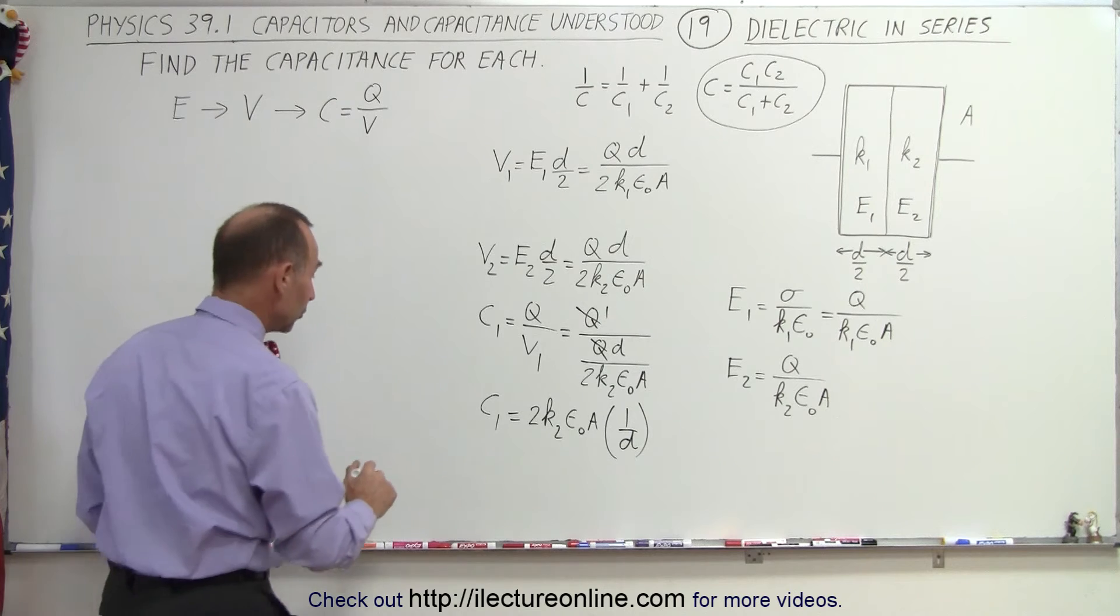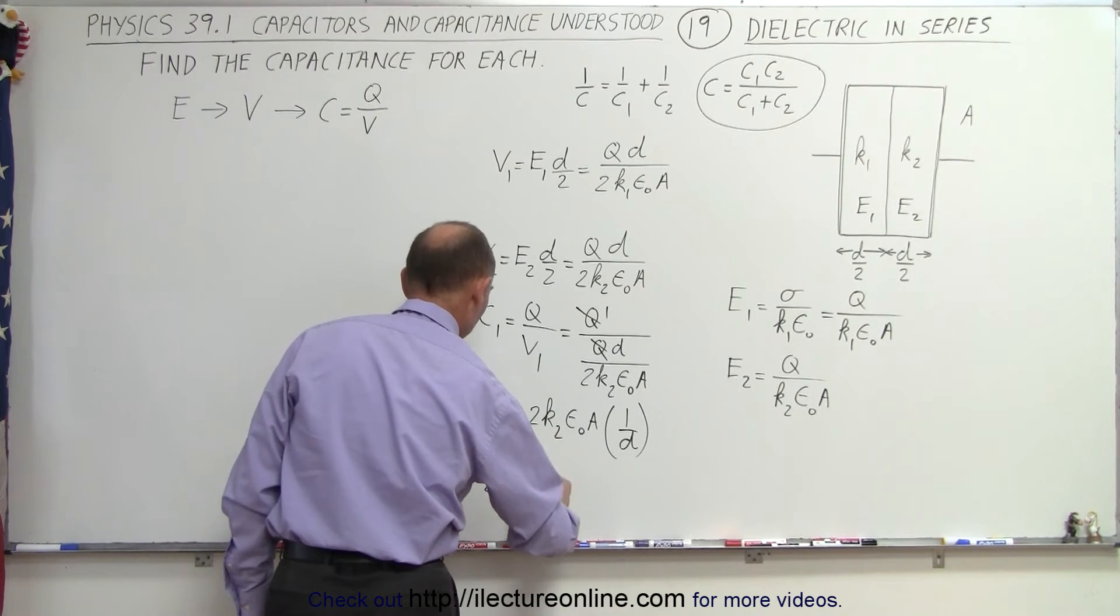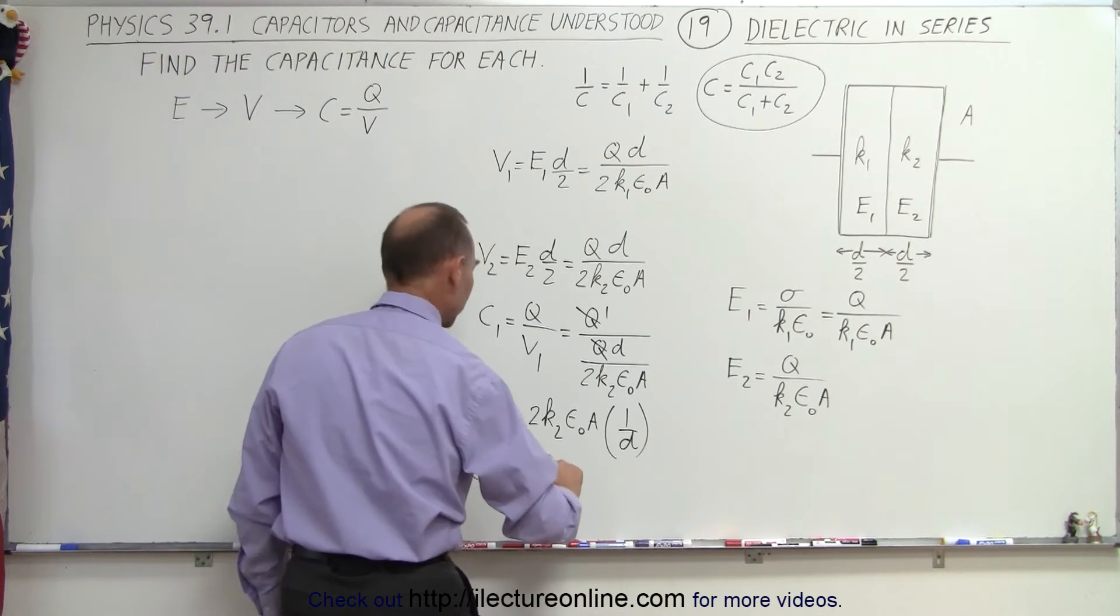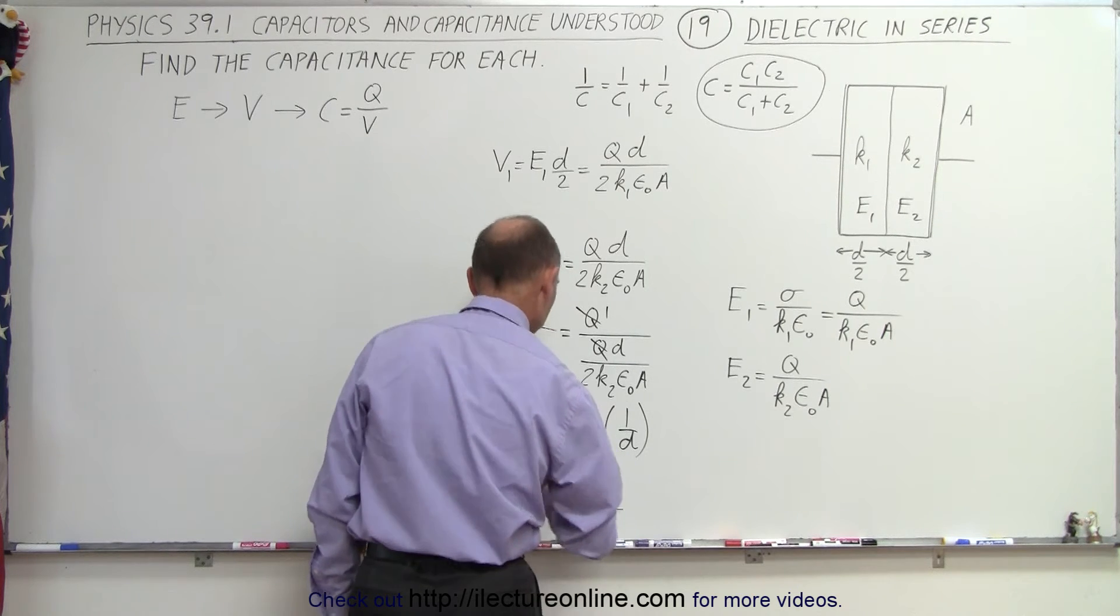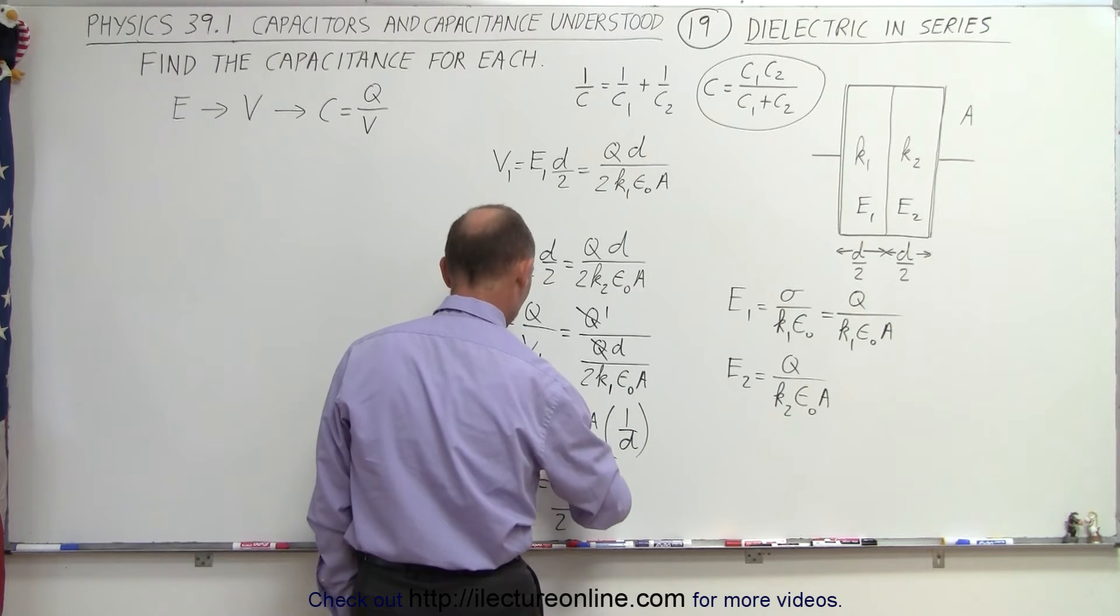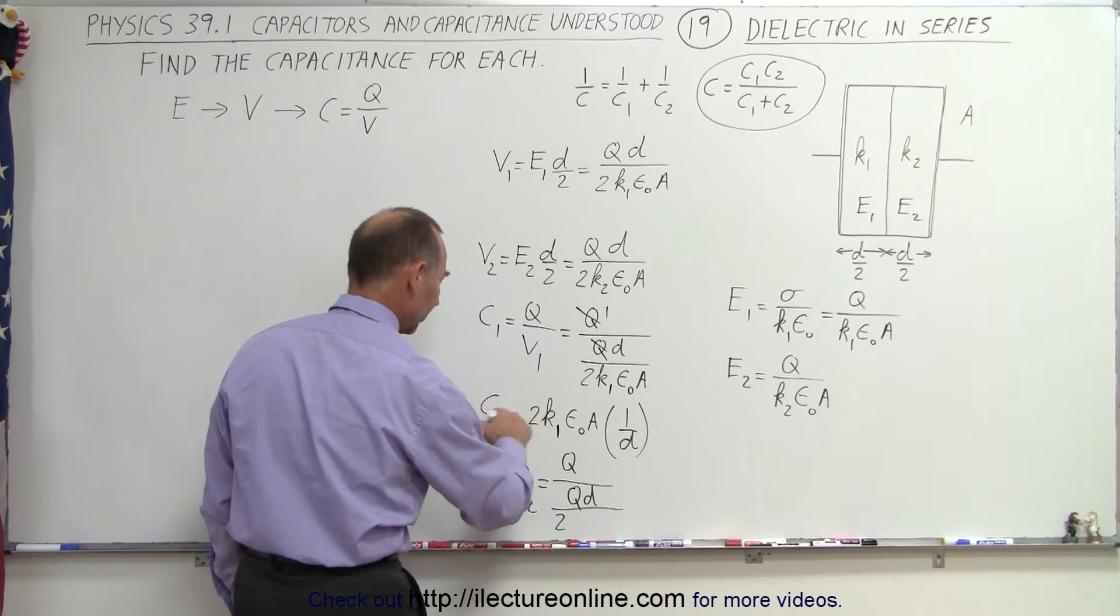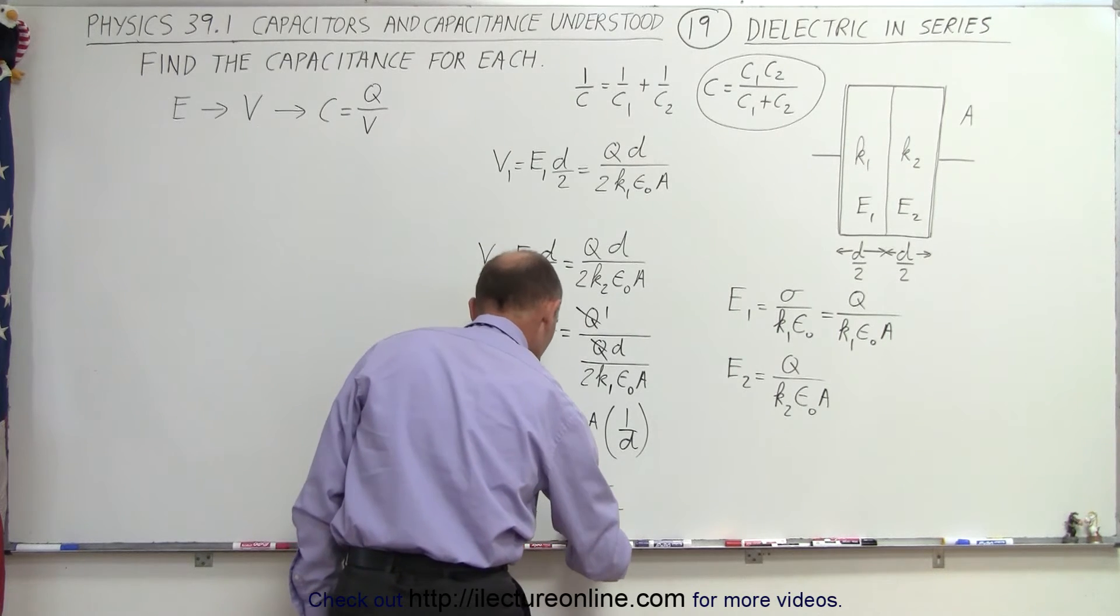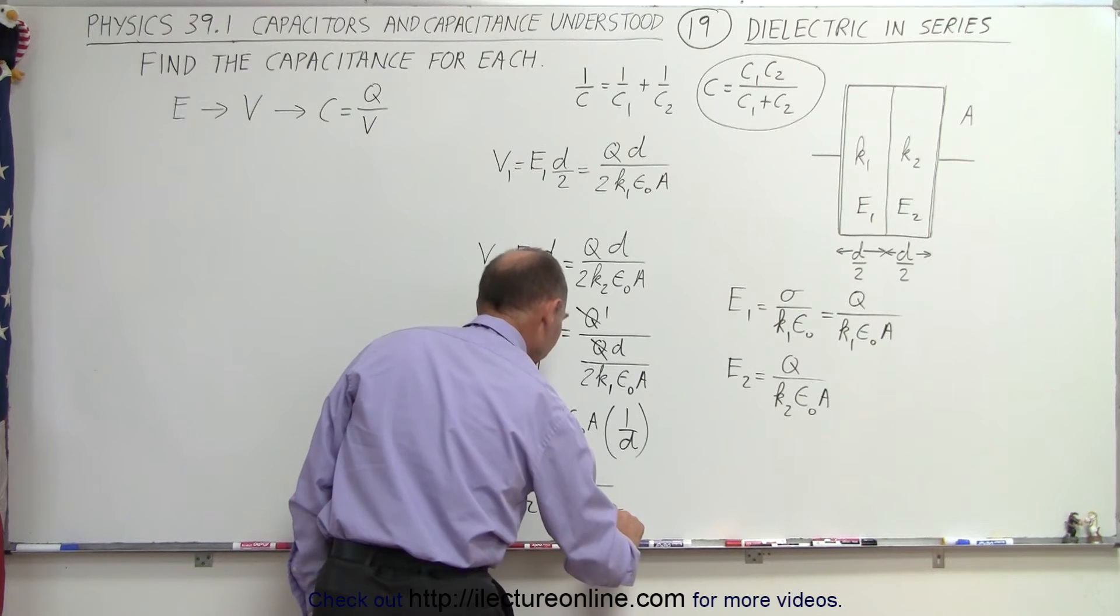Now we can do this for C2. C2 is going to be written as q over V2, which is going to be written as q over q d over 2—oh, I got the wrong subscript here. This is k1, k1 because I'm dealing with C1, good thing that I caught that. Okay, this is C1, and here we have k2, because now we're looking for C2, times epsilon naught times A.